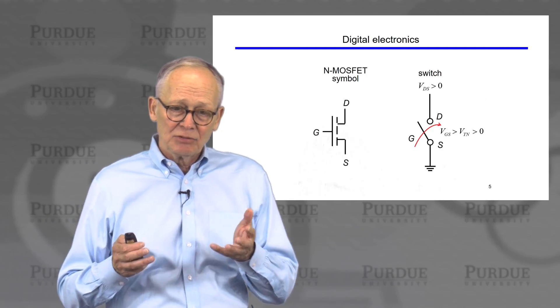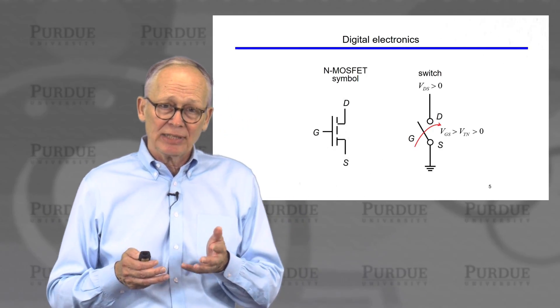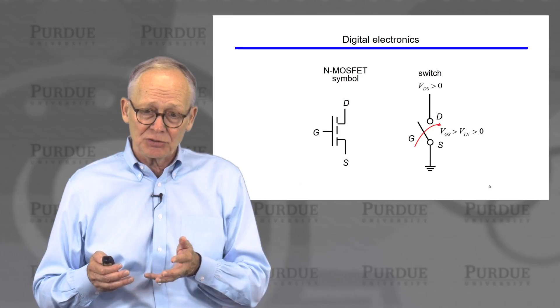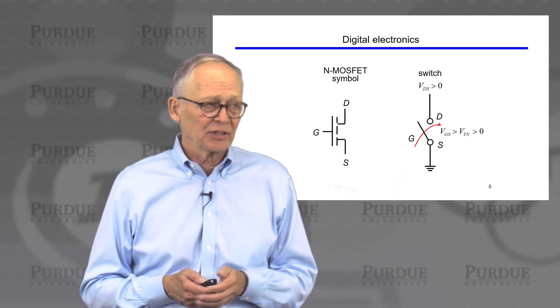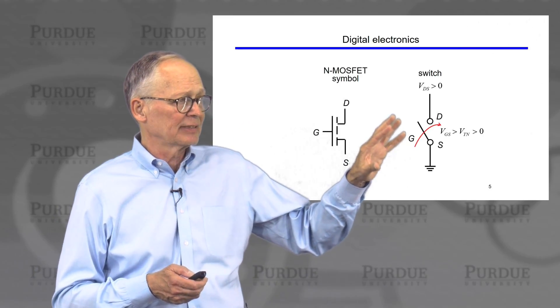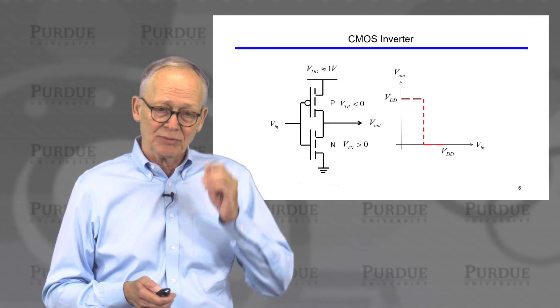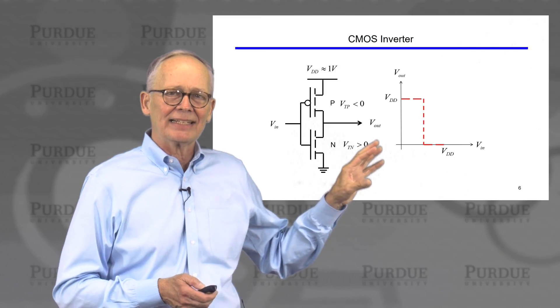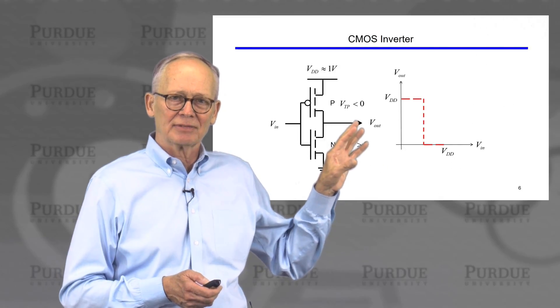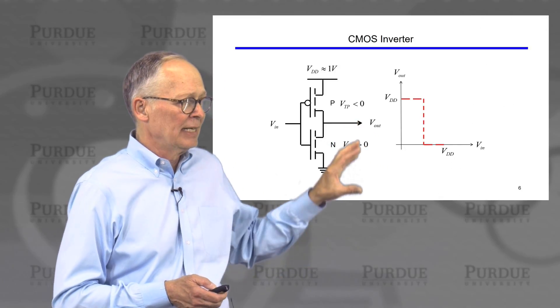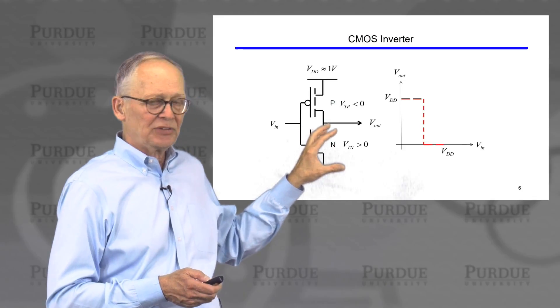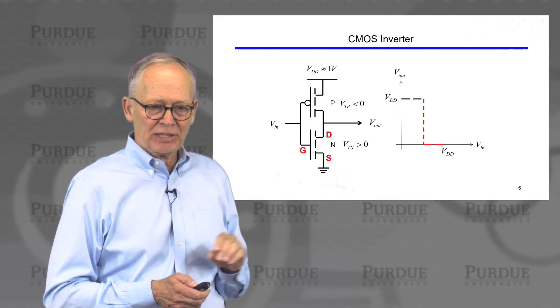So we then talked a little bit about what makes a transistor useful in a digital circuit. In a digital circuit, we're thinking about the transistor as operating as a switch that is either turned on or off by the gate voltage. And then we talked about the basic circuit for CMOS technology, CMOS logic, which couples an N-channel transistor and a P-channel transistor.